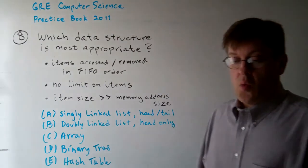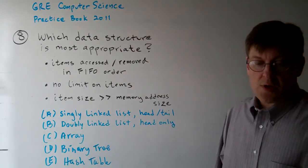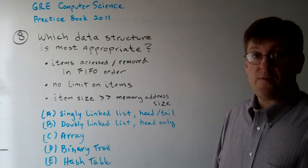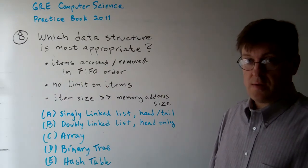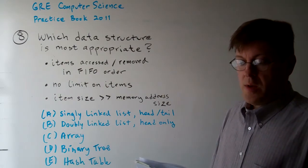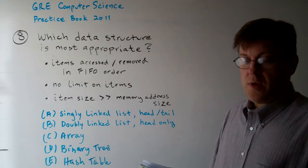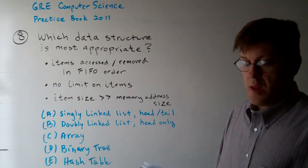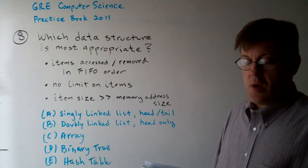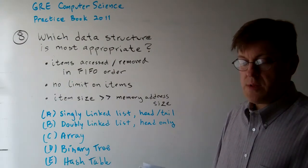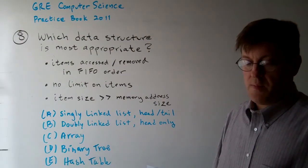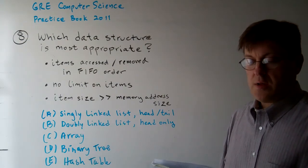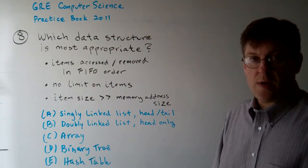Question 8. Which data structure would be most appropriate to implement a collection of values with the following three characteristics? One: items are retrieved and removed from the collection in first-in, first-out order. Two: there is no a priori limit on the number of items in the collection. Three: the size of an item is large relative to the storage required for a memory address.